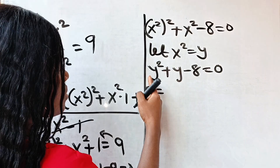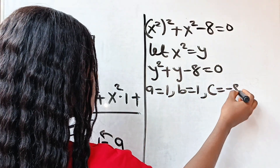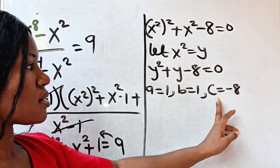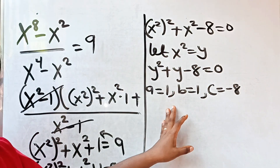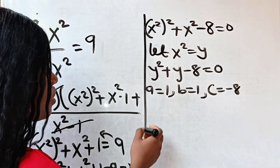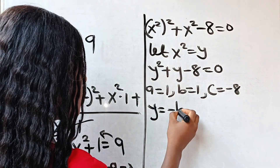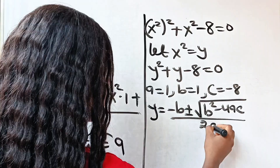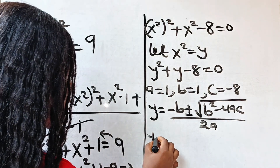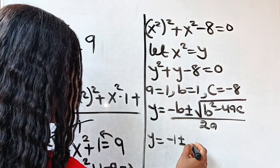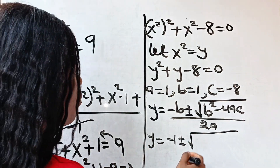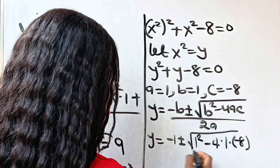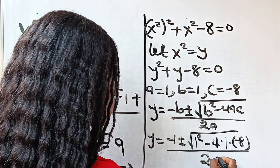Our a is 1 (coefficient of y squared), our b is 1 (coefficient of y), and our c is negative 8 (constant). Using the quadratic formula, y equals negative b plus or minus the square root of b squared minus 4ac, all divided by 2a. So y equals negative 1, plus or minus the square root of 1 squared minus 4 times 1 times negative 8, all divided by 2 times 1.